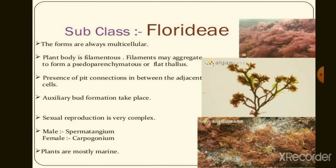Characteristics of subclass Florideae: forms are always multicellular with a filamentous plant body. Filaments may aggregate to form pseudoparenchymatous or flat thallus. There is presence of pit connections between adjacent cells. Auxiliary cell formation also takes place. Reproduction is very complex and oogamous. Males have spermatangia and female reproductive structure is carpogonium. Plants are mostly marine.